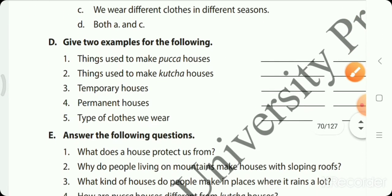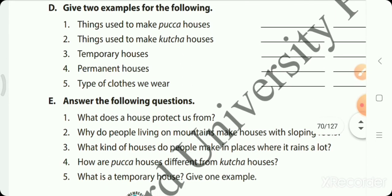Give two examples of the following. Things used to make paka houses - bricks and cement. Things used to make kacha house - mud and straw.